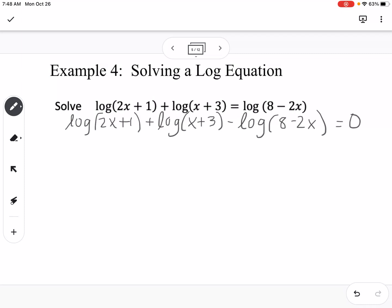Using the properties of logs, I'm going to condense this into a single log. We have plus right here, which means it's going to be multiplied, and we have minus, which means it's going to be divided. This would be log of 2x plus 1 times x plus 3 divided by 8 minus 2x equals 0.